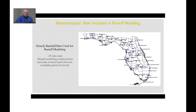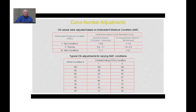The modeling also included adjustments to the curve number to consider dry and wet conditions. For example, if there was less than half an inch in the antecedent five-day period from October to February, it was considered dry conditions and the normal curve number was corrected using tabular values. If it rained more than 1.1 inches during the period from October to February, wet conditions were assumed and the Type 3 antecedent moisture condition curve number was applied.